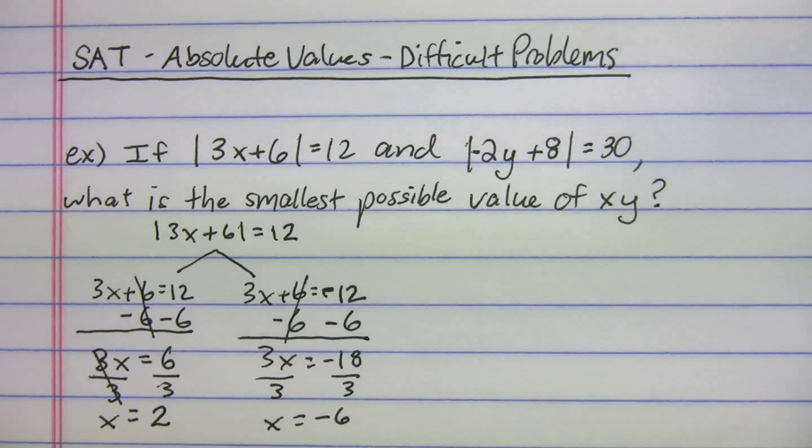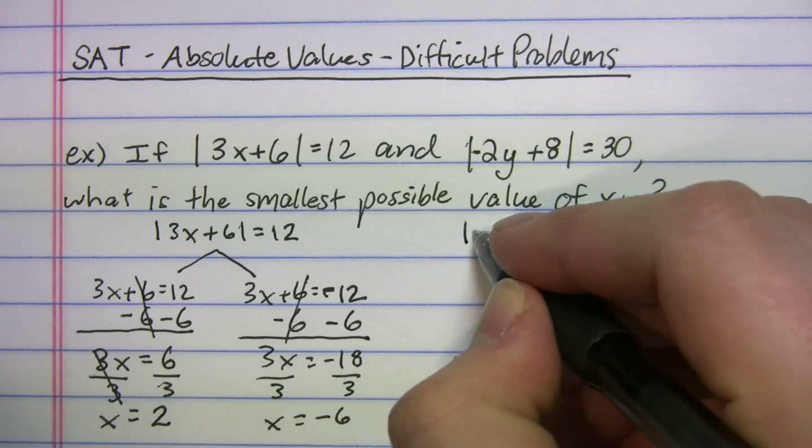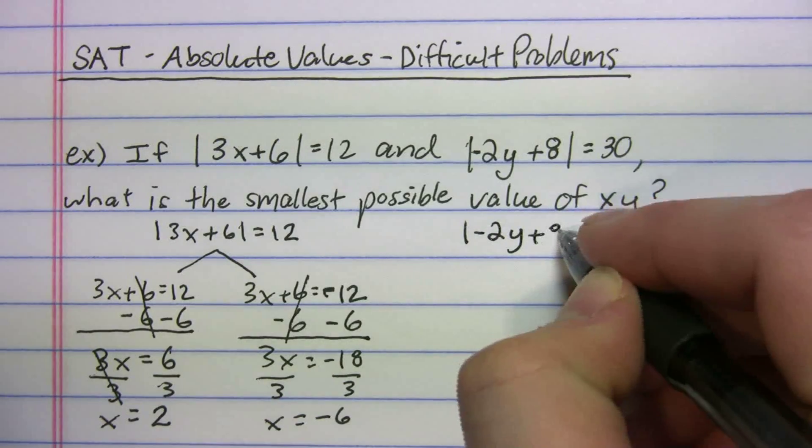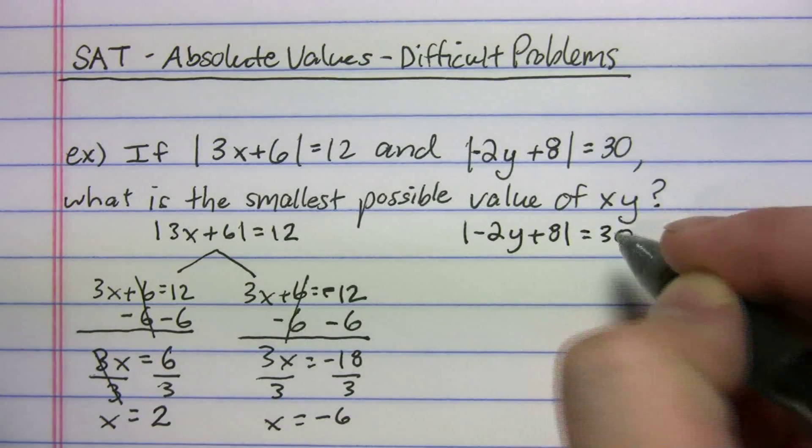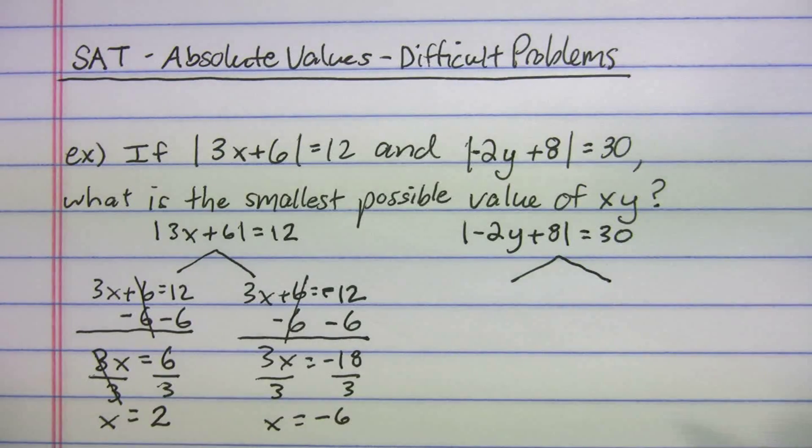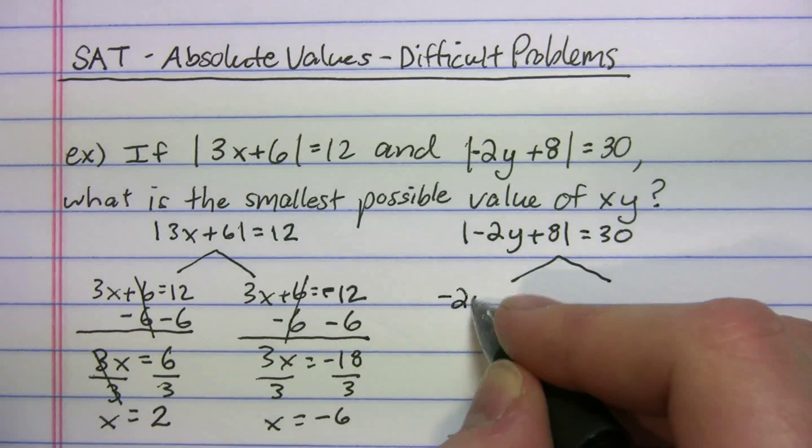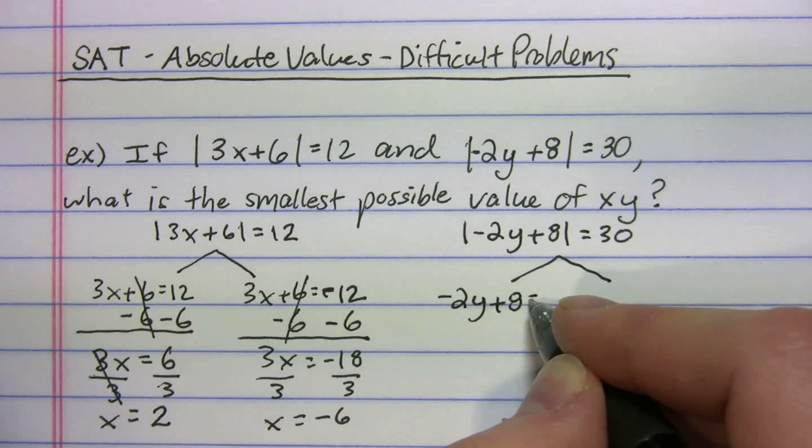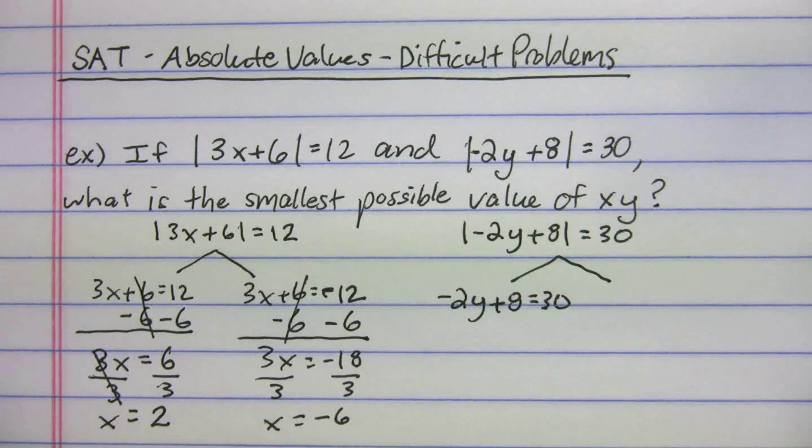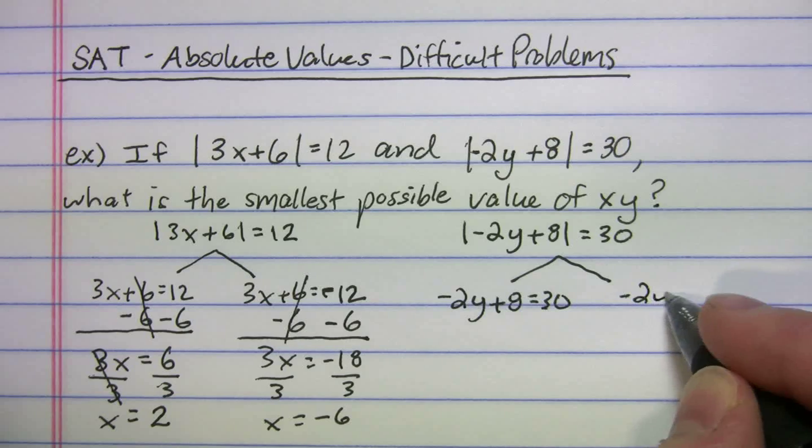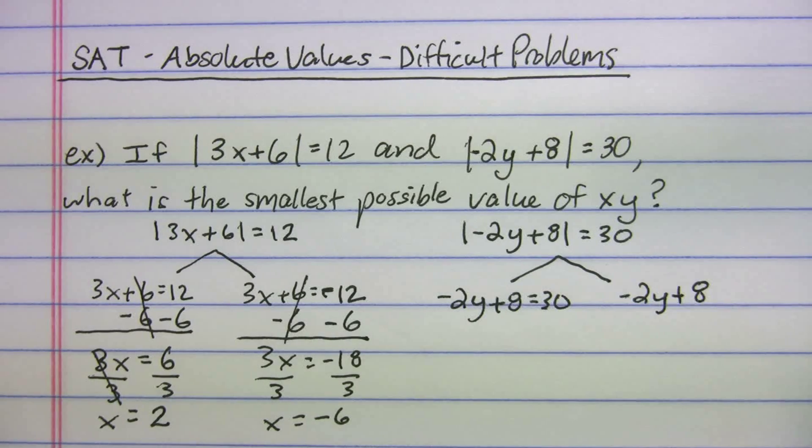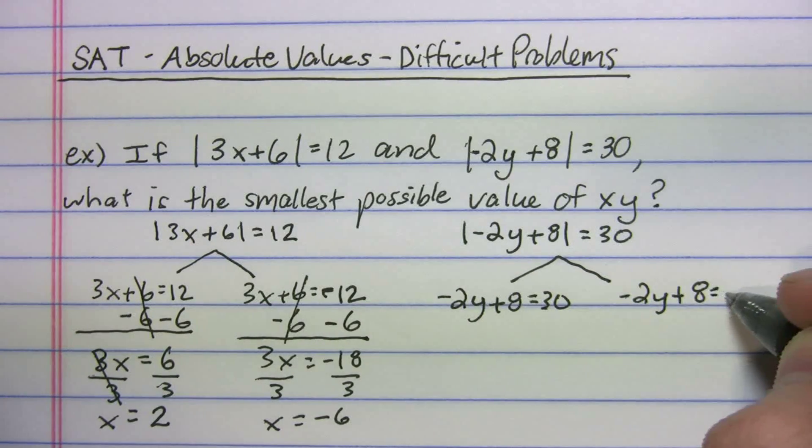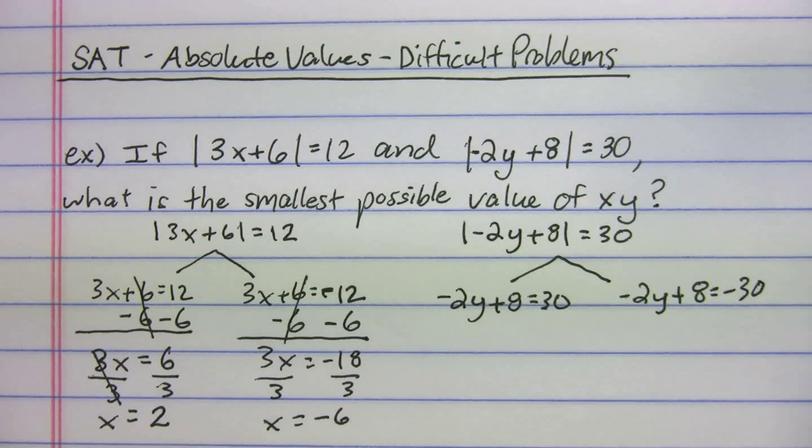Let's find our values for y. So I'll rewrite this one again just so we have it, and we're going to split it up like we did for the other one. So negative 2y plus 8 equals 30, and then we're going to have negative 2y plus 8 equals negative 30.